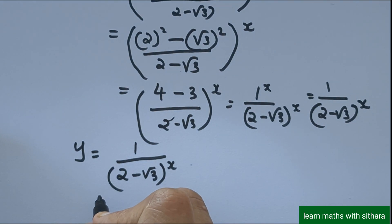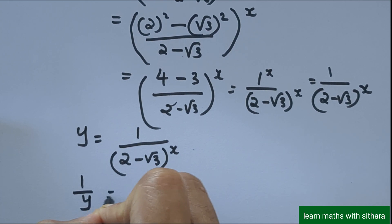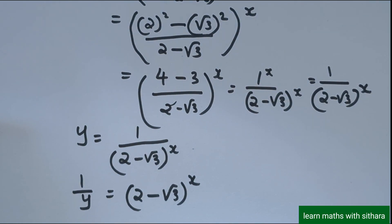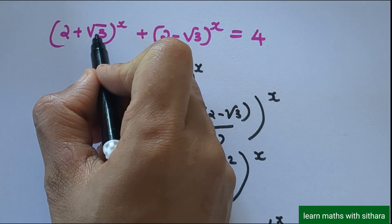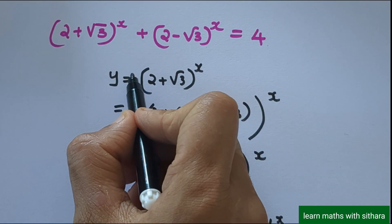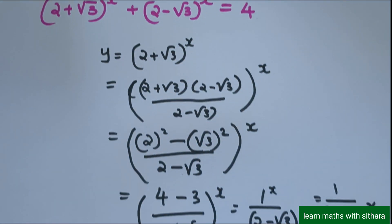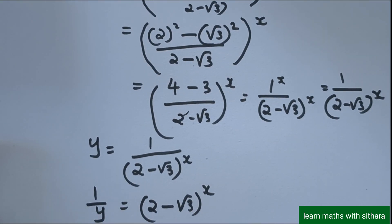So what is 1/y? It is the reciprocal: 1/y equals (2 − √3) raised to x. So in our original equation, (2 + √3) raised to x can be substituted by y, and (2 − √3) raised to x can be substituted by 1/y. This gives us y + 1/y = 4.